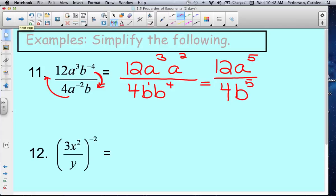Now let's see what we can simplify. Well, 12 and 4 can reduce by 4. So we reduce it by 4, we get 3 and 1. So our final answer then is 3a to the 5th over 1 times b to the 5th, or just b to the 5th.